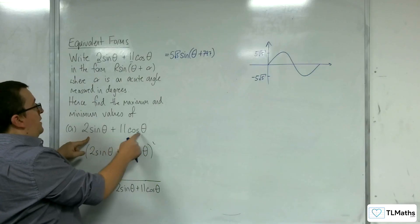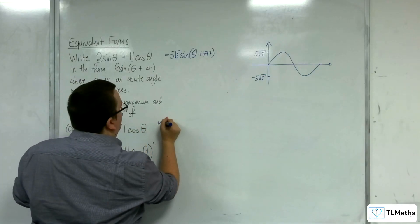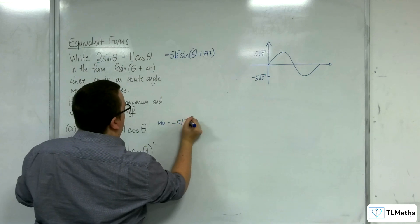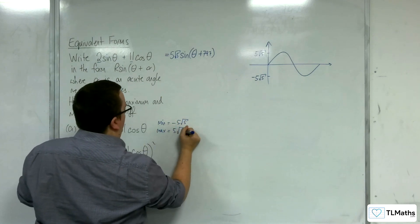So if I'm being asked what's the maximum minimum value of this, the minimum value is negative 5 root 5, and the maximum value is 5 root 5.